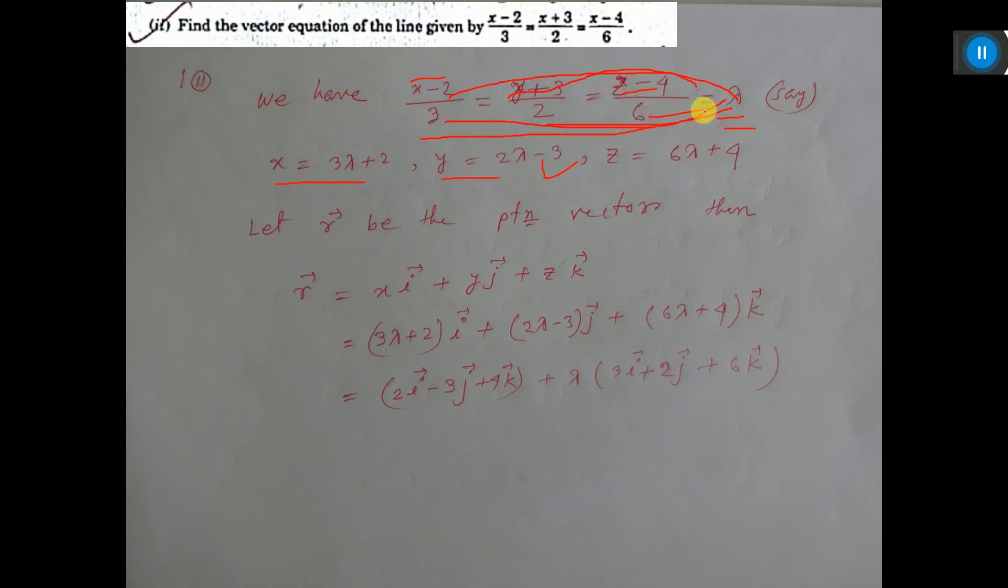z minus 4 equals 6 lambda, so z equals 6 lambda plus 4. Now if you consider r the position vector, then r equals xi plus yj plus zk. That you know, this is the formula.